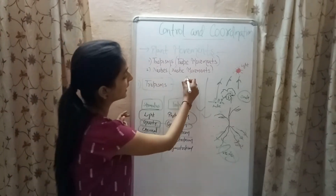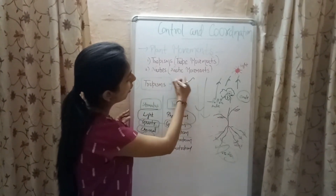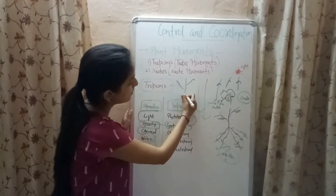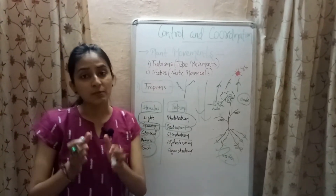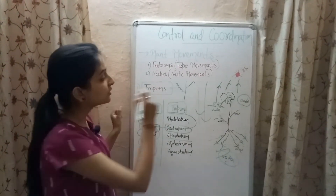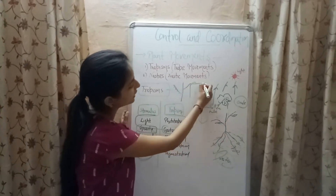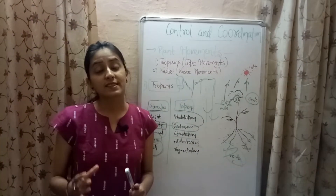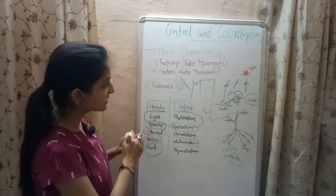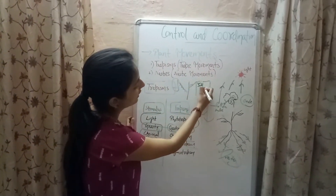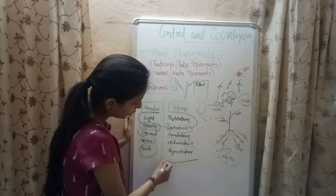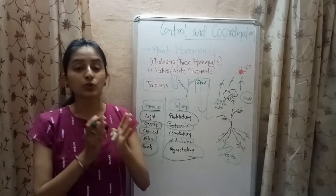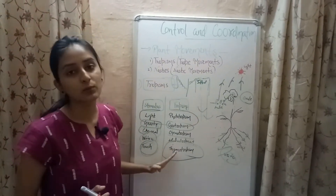When the stimulus is touch, the tropism is called thigmotropism. In a grape plant, tendrils are present — thin stem-like structures arising from the stem. Tendrils need support for their growth, and when they come in contact with a support like a wall or wood, they grow toward it. This is positive thigmotropism.